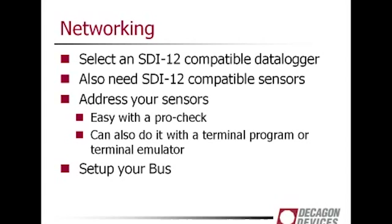When you're actually networking, first you need to select an SDI-12 compatible logger — your logger manufacturer can help you there. You'll also need SDI-12 compatible sensors, and then you need to address your sensors. All Decagon sensors leave the factory with a default SDI-12 address of zero. If you want to put 62 sensors on one port, you'll need to give each sensor a unique address. This is easy to do with a ProCheck, a handheld device that among other things can address your sensors. You can also do it with a terminal program or terminal emulator.